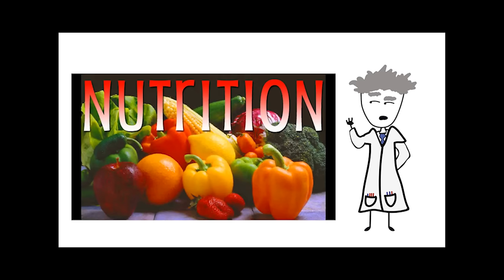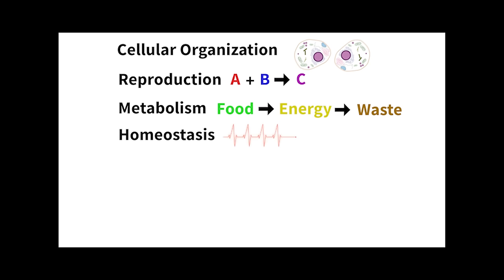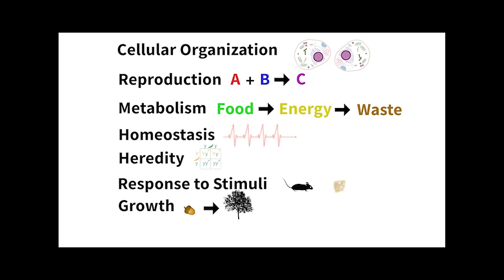Yeah, no, this isn't the correct list of what defines something as living. The correct list is cellular organization, reproduction, metabolism, homeostasis, heredity, response to stimuli, growth, and adaptation. But I'm guessing you're going to disqualify this list because it doesn't represent all living things.